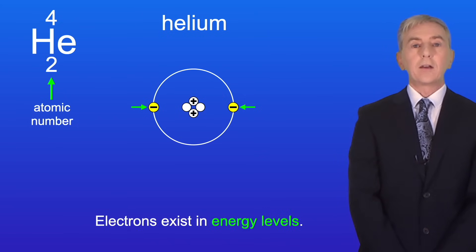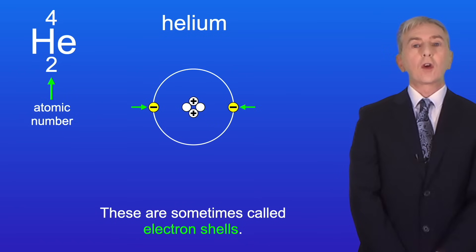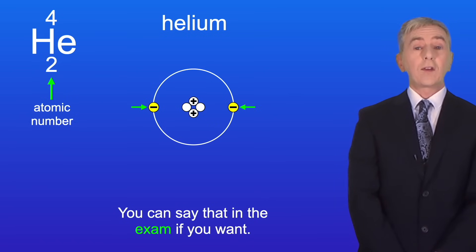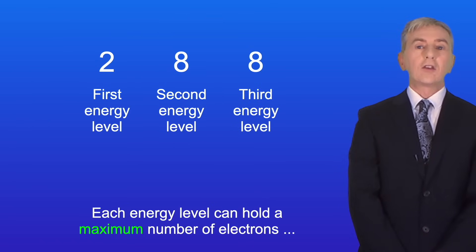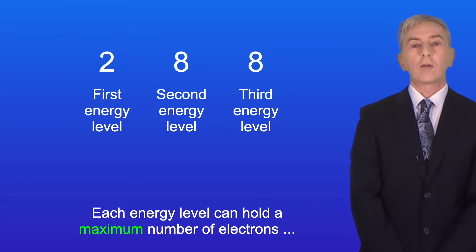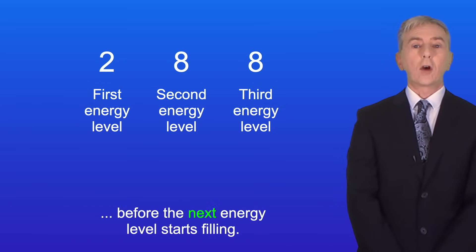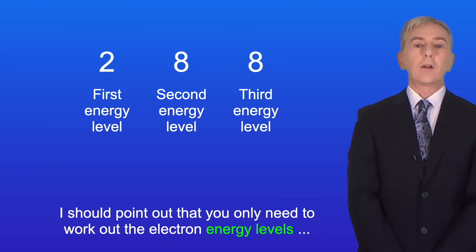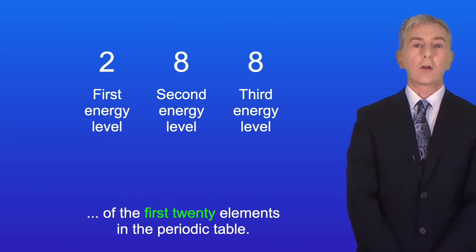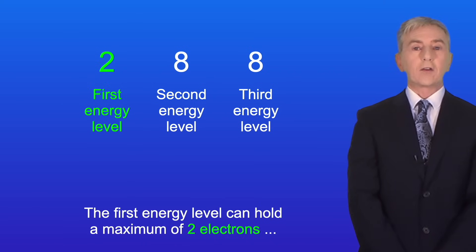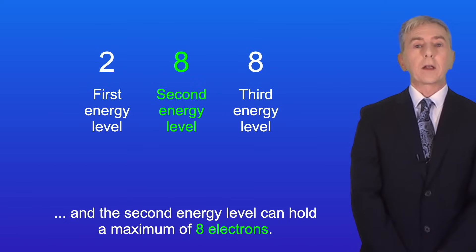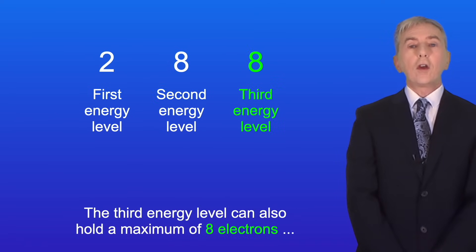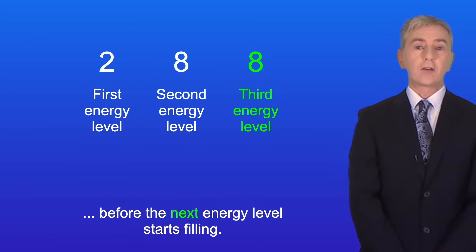Electrons exist in energy levels, sometimes called electron shells — you can use either term in the exam. Each energy level can hold a maximum number of electrons before the next energy level starts filling. You only need to work out electron energy levels for the first 20 elements. The first energy level holds a maximum of two electrons, the second a maximum of eight, and the third energy level can also hold a maximum of eight electrons before the next level starts filling.